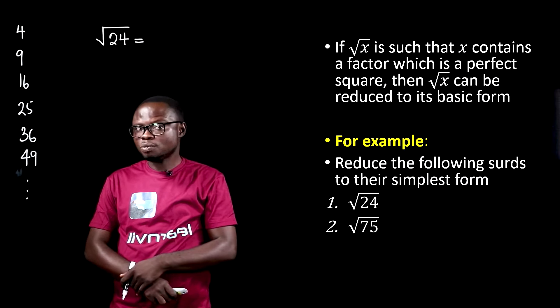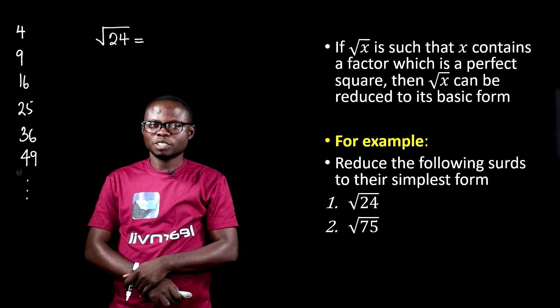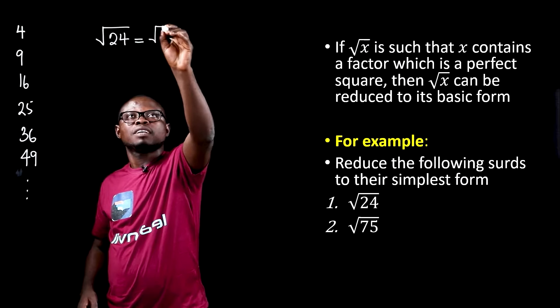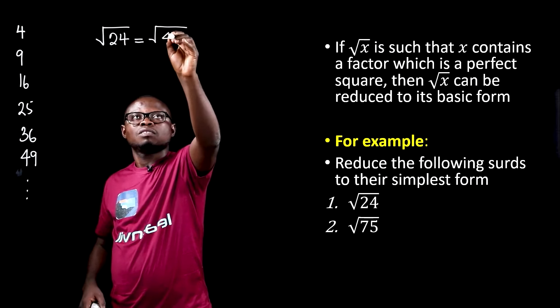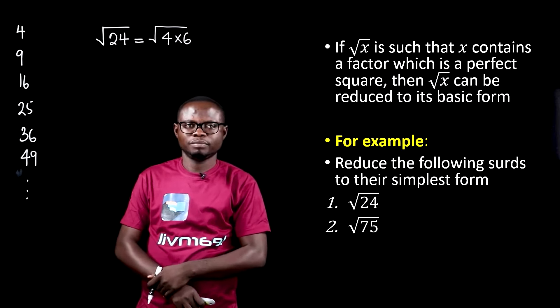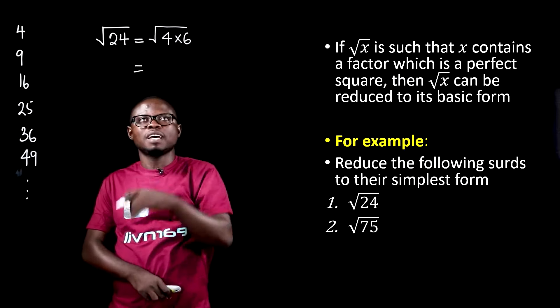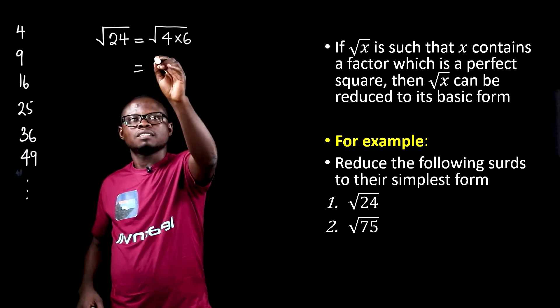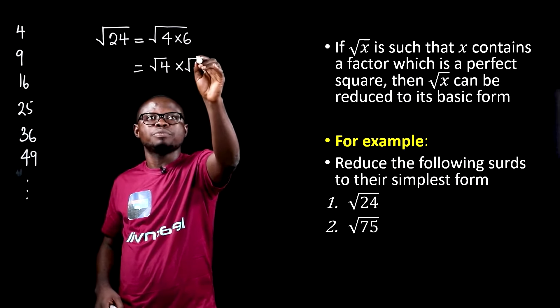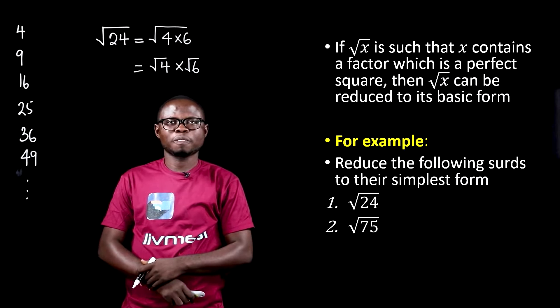Perfect. 24 can be expressed as 4 times 6. We can further expand this as the square root of 4 times the square root of 6.